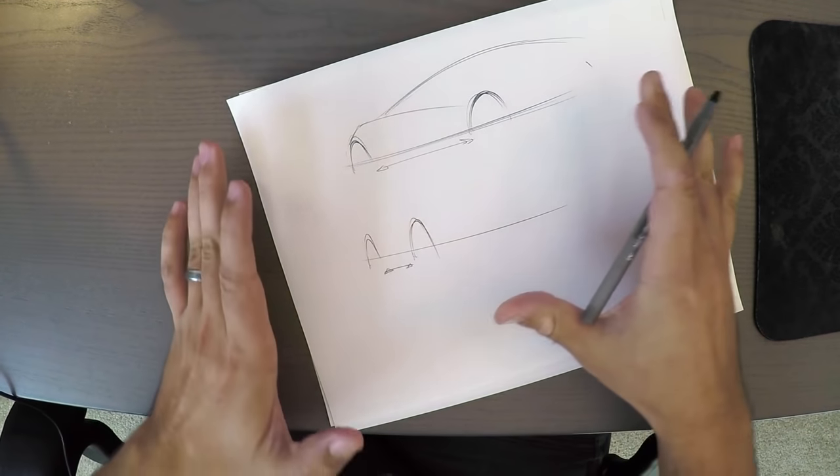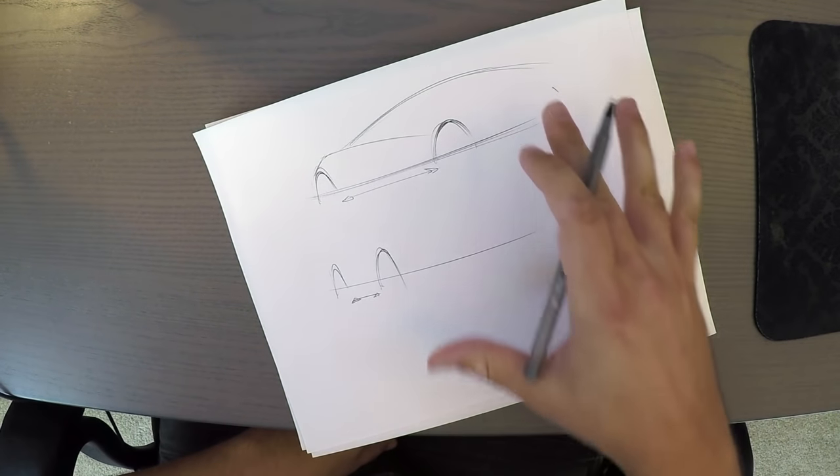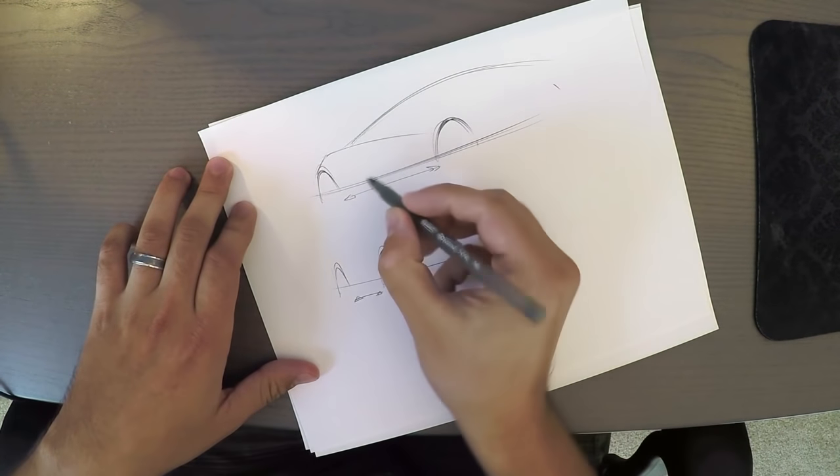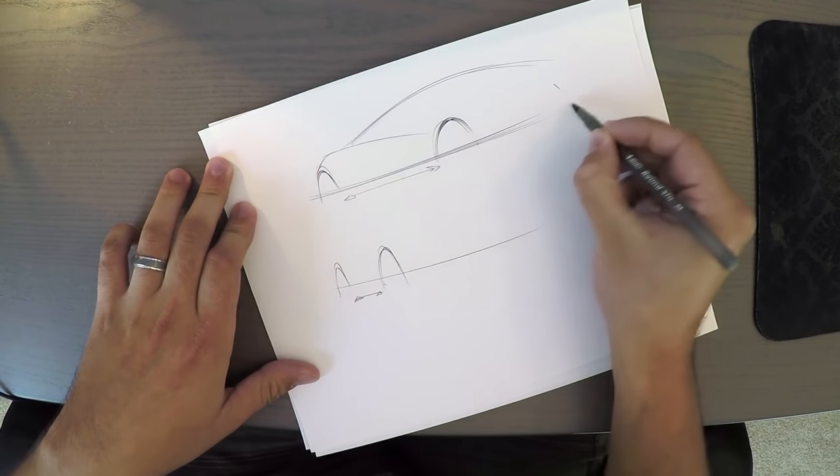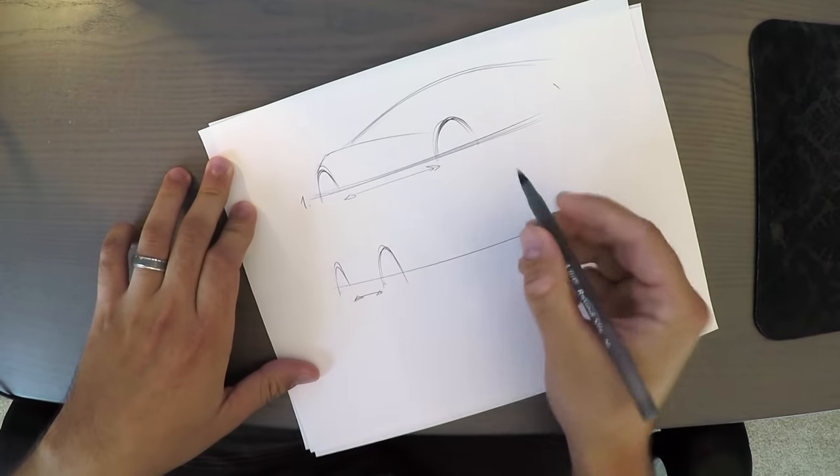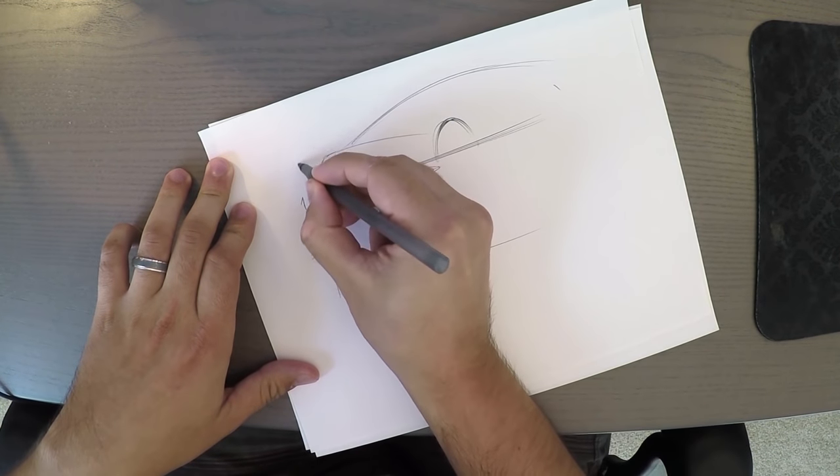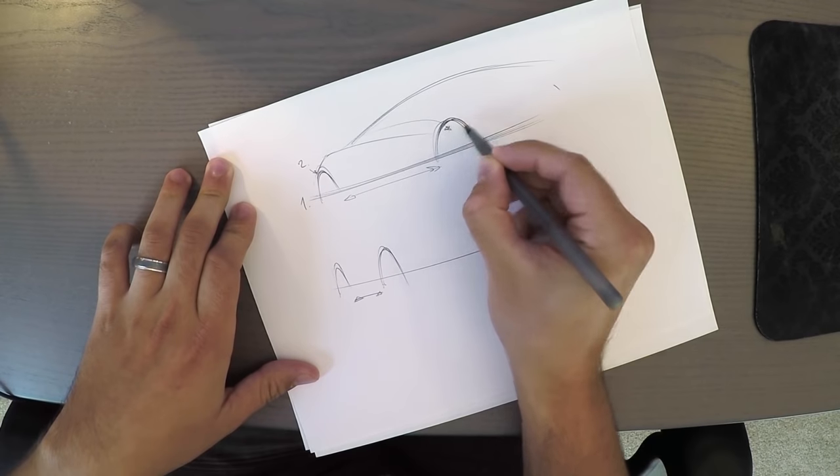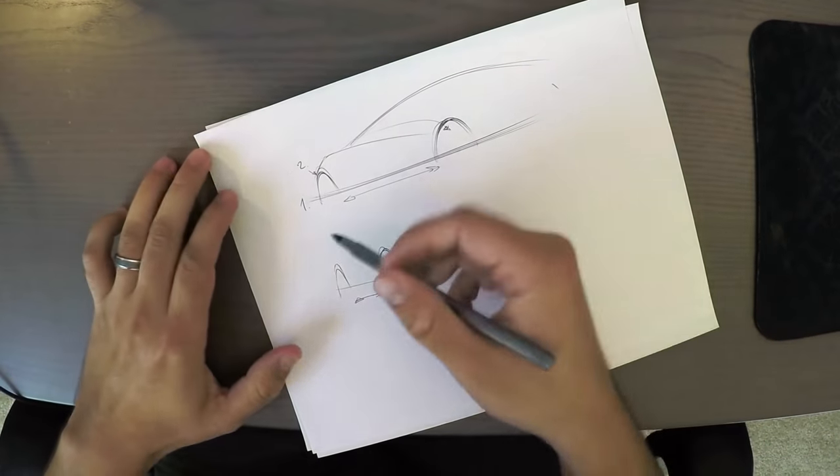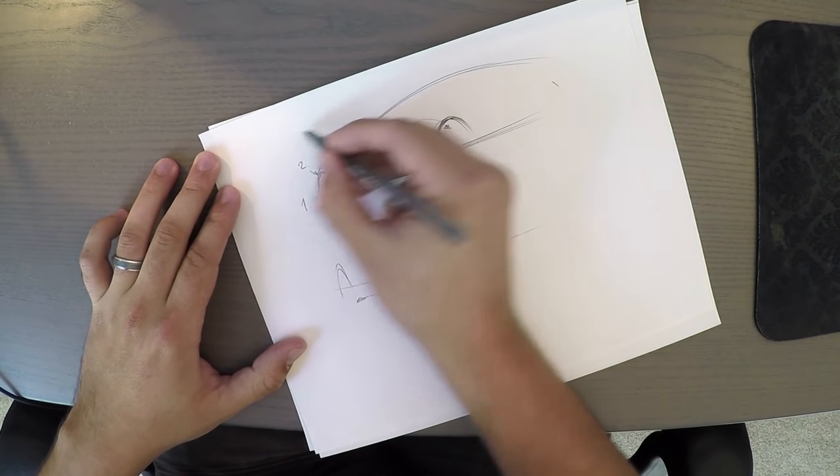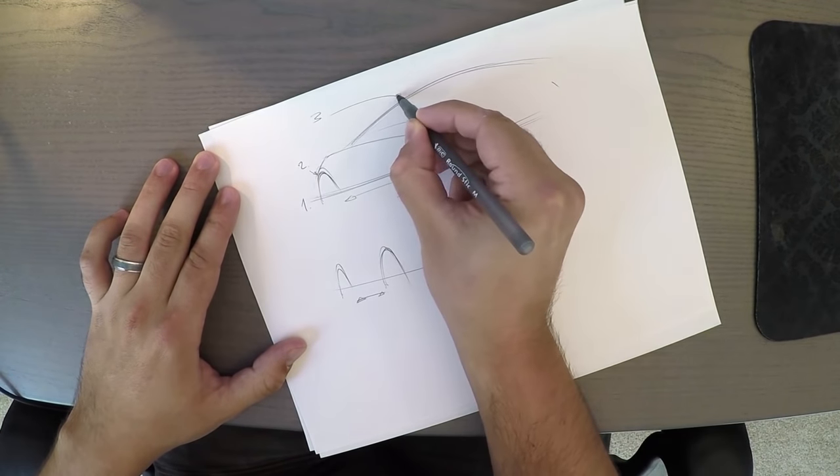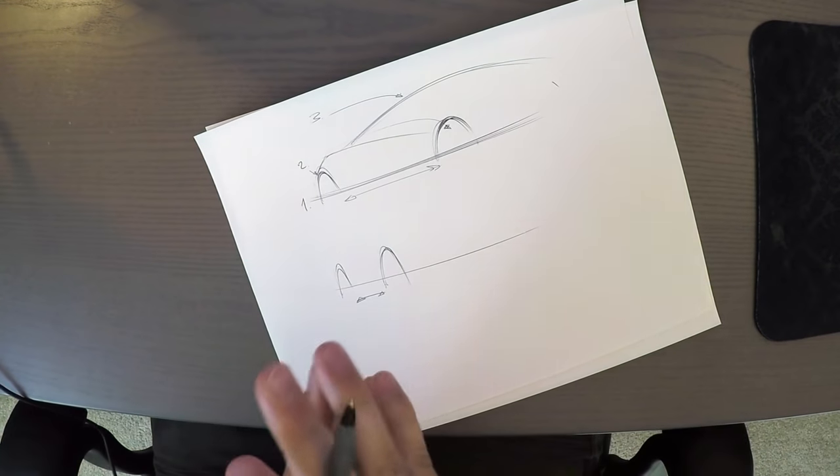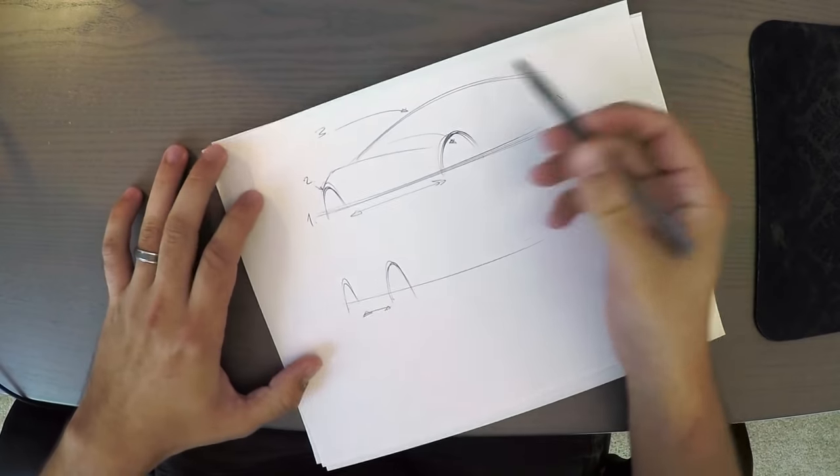From here we have the proportions of the car, and this is where the fun starts. This takes probably 10-15 seconds to get all of these three features down. The first one was the baseline, the second feature was the wheels, and the third one is the greenhouse. This is all you need to start to design your car. It really doesn't have to be more complicated than that.